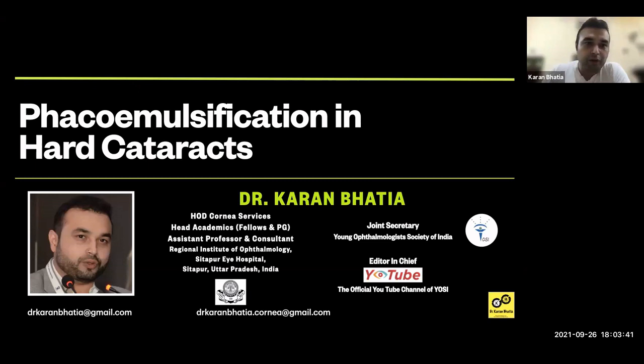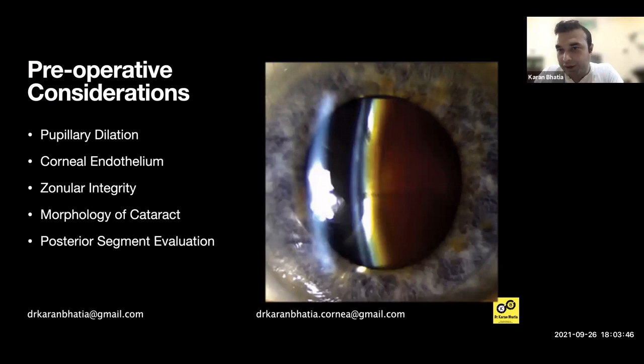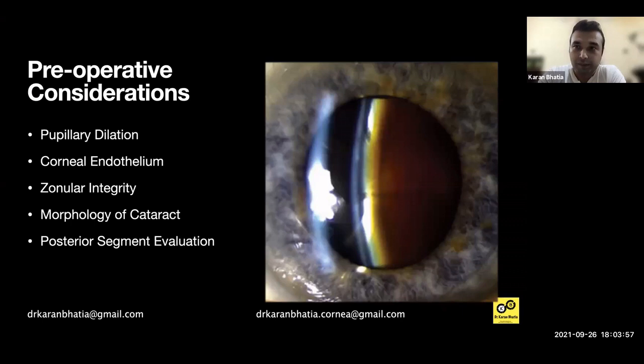My topic is FACO in hard cataracts. There are a lot of factors you need to consider in such cases — particularly how much pupillary dilation is present, as seen in the picture. What is the status of the corneal endothelium? Preferably do specular microscopy if available, and if not, at least do a good slit lamp examination. With the specular reflex, you can check and look for Guttae, particularly in cases of hooks.